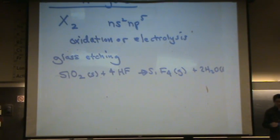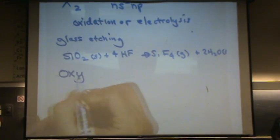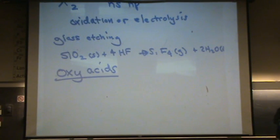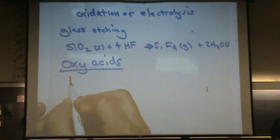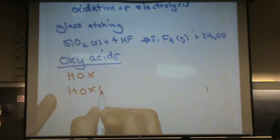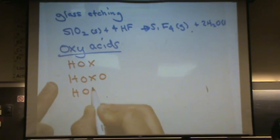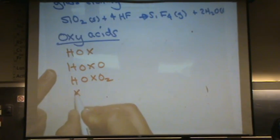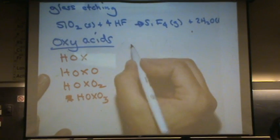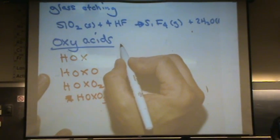Okay. Halogens also form what's called oxyacids. You've seen these before. Oxyacids. Let me write them down first, and then I'll show you a picture of them. HOX. HOXO. HOXO2. HOXO3. Those are your oxyacids.